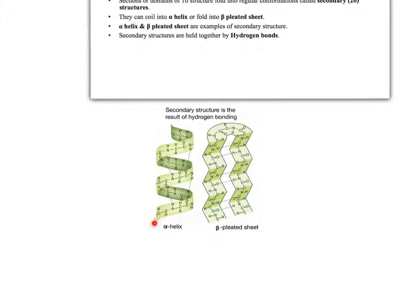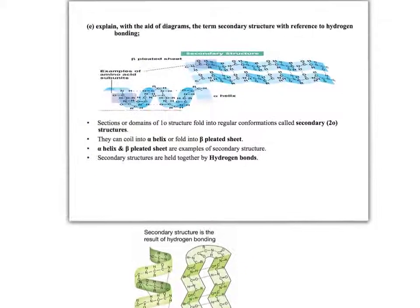So secondary structure: alpha helix, beta pleated sheet, both held together with hydrogen bonds. The next level of description of protein structure is tertiary structure.